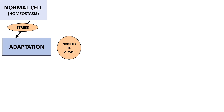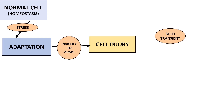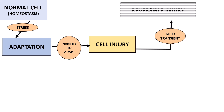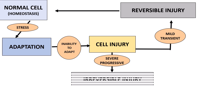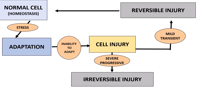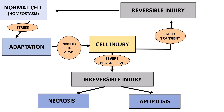If the cells are unable to adapt, then what happens is cell injury. Because the cells are not able to adapt, the cells are now injured. And if the injurious agent or the stress is mild and transient, it goes through a process called reversible injury, and once the inciting agent is removed, it gets back to its normal state. If the injurious agent is severe and progressive, then it results in irreversible injury, and two major forms of irreversible injury are necrosis and apoptosis, which are forms of cell death.